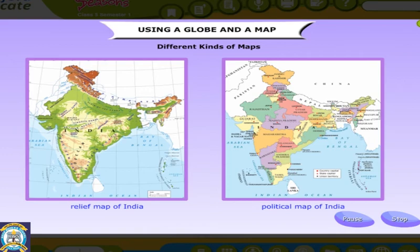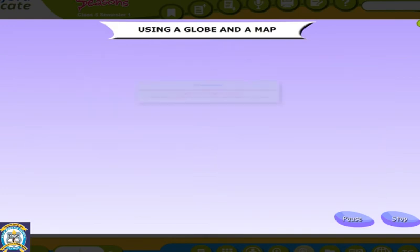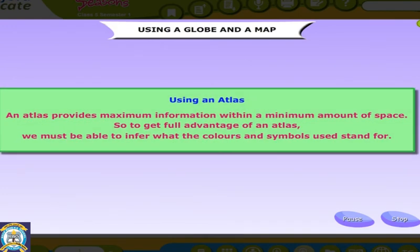A political map will show countries, their boundaries, the states and the capitals. An atlas provides maximum information within a minimum amount of space. So to get full advantage of an atlas, we must be able to infer what the colors and symbols stand for.